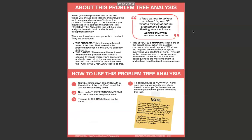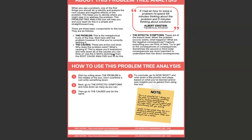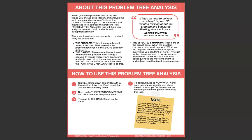So first, about this problem tree analysis. A brief description: when you see a problem, one of the first things you should do is identify and analyze the root causes and negative effects of the problem. This helps you decide where you might step in to address the problem. This problem tree analysis tool will help you and your team do this in a simple and straightforward way. There are three basic components to this tool.